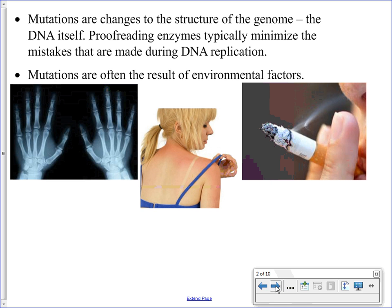When a cell is going to divide through mitosis or meiosis, the DNA has to be replicated, and there is a chance that an improper base will be inserted. DNA polymerase enzymes try to prevent this by serving as proofreading enzymes — not only are complementary nucleotides brought in, but DNA polymerases also proofread to ensure the correct nucleotide has been inserted, which minimizes mistakes in DNA replication.